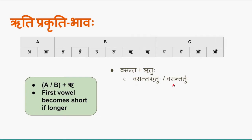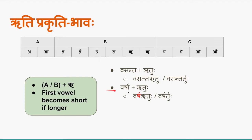Why do we call this prakriti bhava? Though there is a possibility of undergoing sandhi, we don't apply it — we use the words as they are even though they are adjacent. The next example: 'varsha + ruthu' — again akara plus rikara. There is a possibility of guna sandhi, and as per this rule we can optionally treat it as prakriti bhava. If the first letter is a long vowel, it becomes a short vowel.